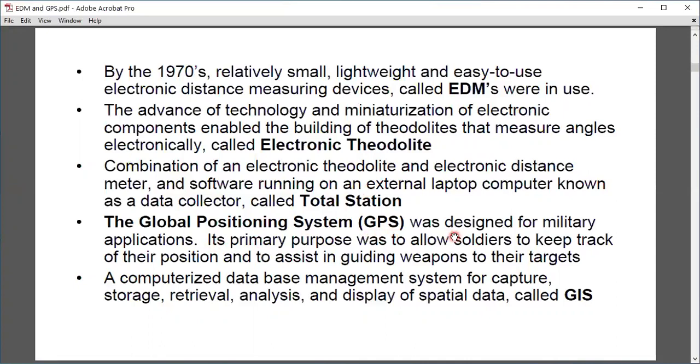The Global Positioning System GPS was designed for military application. Its primary purpose was to allow soldiers to keep track of their positions and to assist in guiding weapons to their targets. GIS is a computerized database management system for capturing, storage, retrieval, analysis, and display of spatial data.